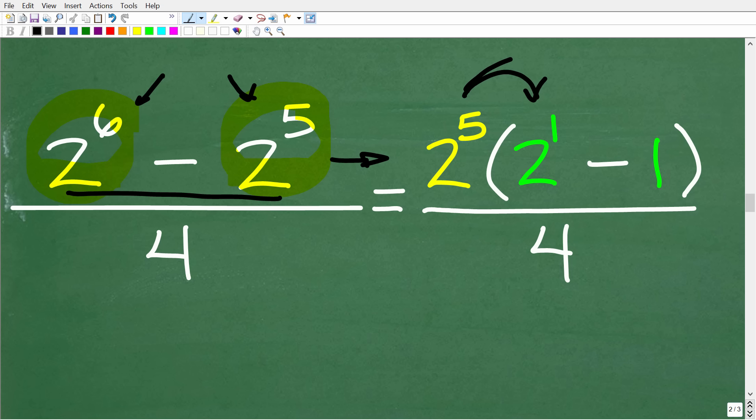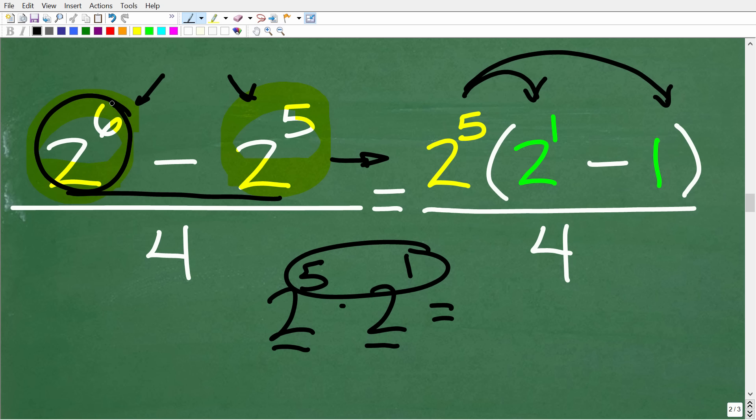Now, if we use the distributive property and multiply 2 to the 5th back in, we're going to get 2 to the 5th times 2 to the 1st. Now, when you're multiplying powers with the same base, you're going to add the exponent. So 2 to the 5th times 2 to the 1st is 2 to the 6th. And then 2 to the 5th times 1 is 2 to the 5th. All right, so if you understand this factoring right here, then we can solve this problem pretty easily.